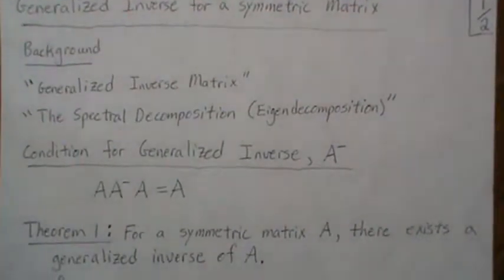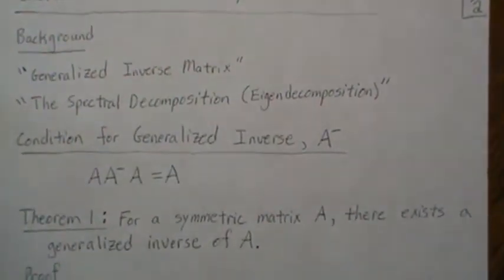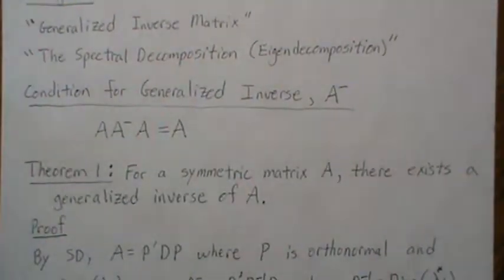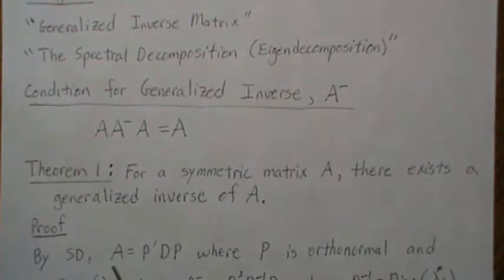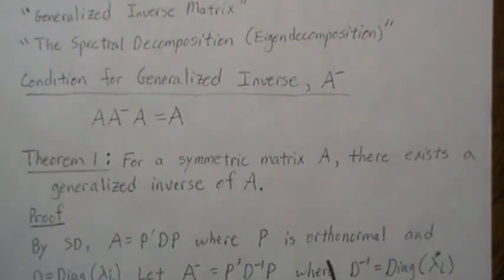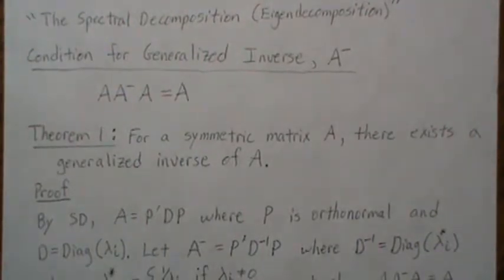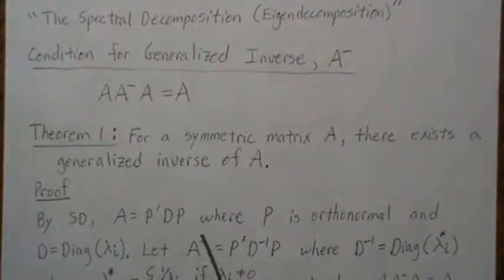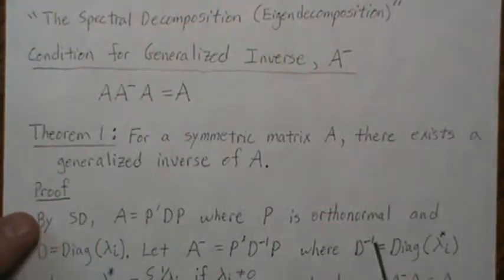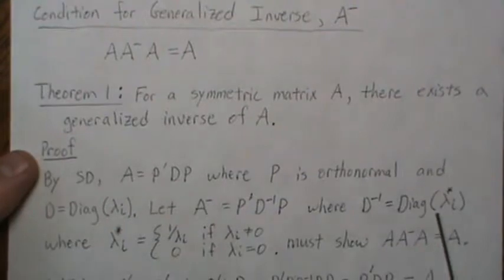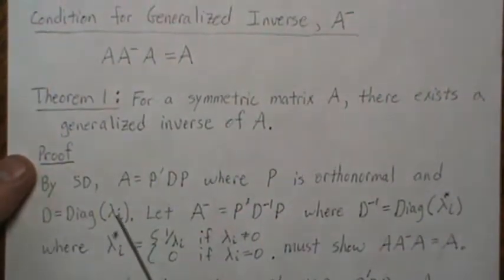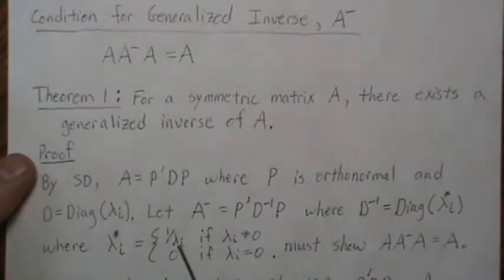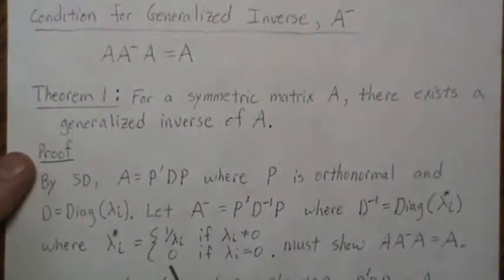For Theorem 1: for a symmetric matrix A, there exists a generalized inverse of A. By the spectral decomposition theorem we can decompose A into P'DP, where P is orthonormal and D is a diagonal matrix. We let the generalized inverse equal P' D-inverse P, where D-inverse is a diagonal matrix whose elements are the reciprocals of the diagonal elements of D — or zero if the diagonal element is zero.